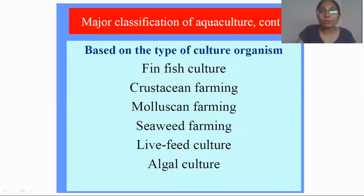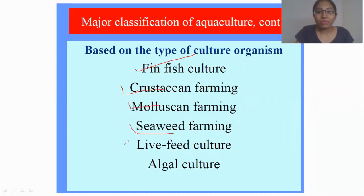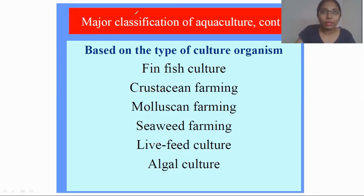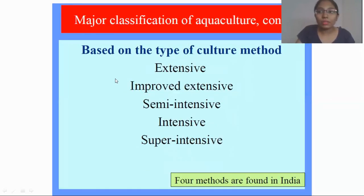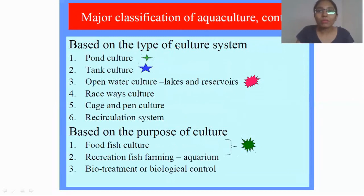Based on the type of culture organism used, aquaculture is classified as finfish culture, crustacean farming, molluscan farming, seaweed farming, live feed culture, algal culture, and so on. Based on the type of culture matter, we have extensive farming, improved extensive, semi-intensive, intensive, and super-intensive.